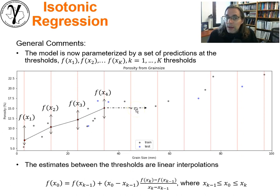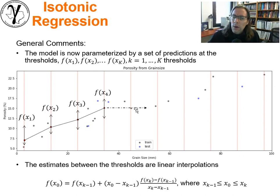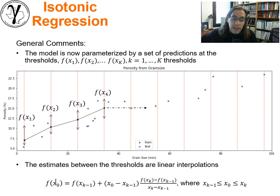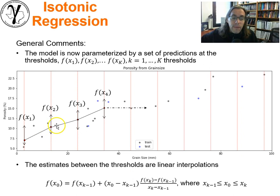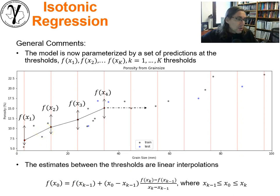This is pretty interesting — we have a very flexible model which, for a problem with one predictor feature, has quite a low number of parameters. To make a prediction, we identify which bin we're in and then use the linear interpolation equation for that specific bin. So it's not a big deal — a pretty flexible model and very easy to work with.